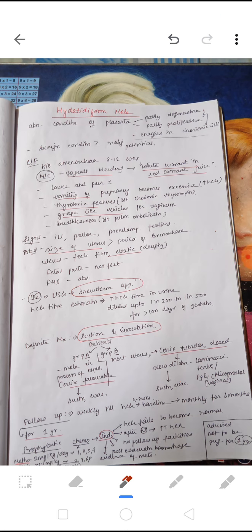Gestational trophoblastic disease can progress to a gestational neoplasia like invasive mole, choriocarcinoma, and placental site trophoblastic tumor. Hydatidiform mole is basically an abnormal condition of placenta with partly degenerative and partly proliferative changes in the chorionic villi.